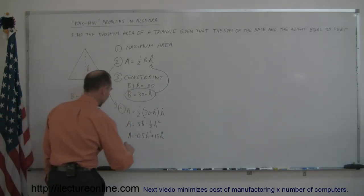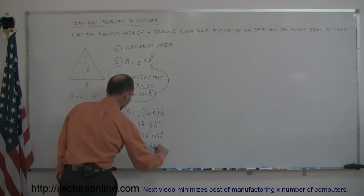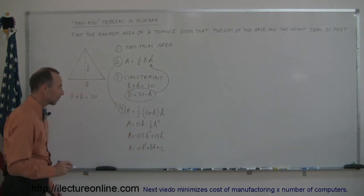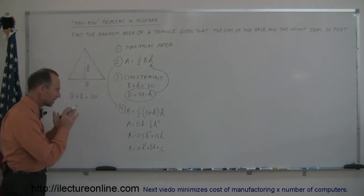And of course the general equation, the general quadratic equation would be A equals ah squared plus bh plus c. And now if we're going to find the maximum or minimum area, in this case the maximum area, how do we do that? What's the technique here?